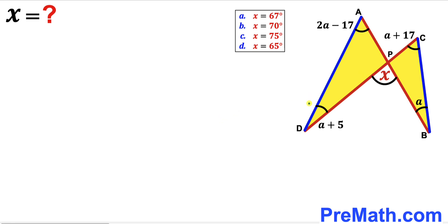Welcome to pre-math. In this video we have got two lines a, b and c, d that intersect each other at point P, and as a result we ended up with two yellow shaded triangles as you can see in this given diagram.